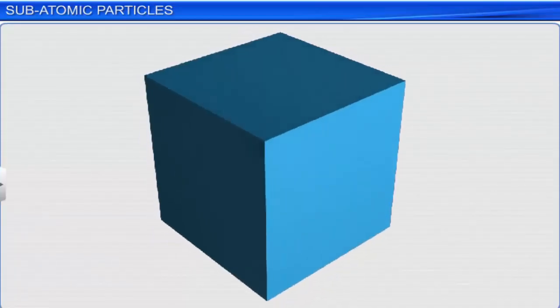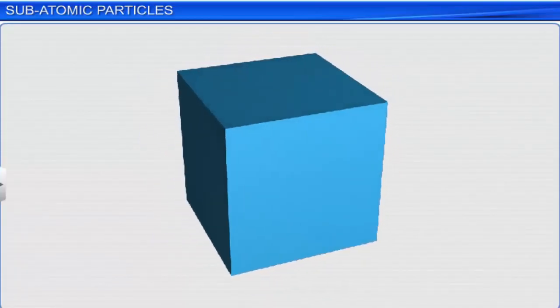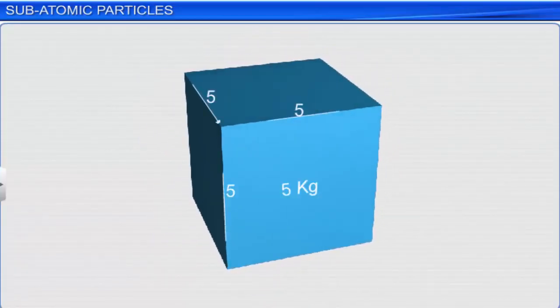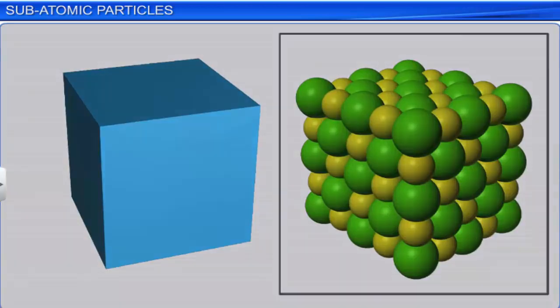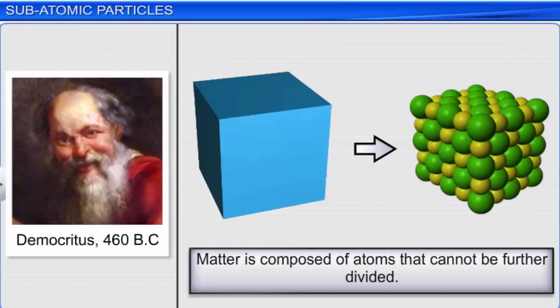Any substance that has mass and occupies space is called matter. It is made up of small particles called atoms that cannot be further divided. This idea was first proposed by the Greek philosopher Democritus back in 460 BC.